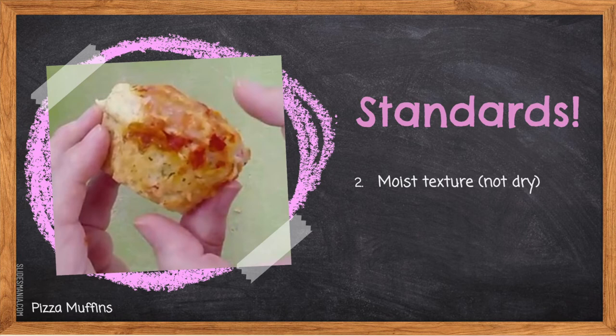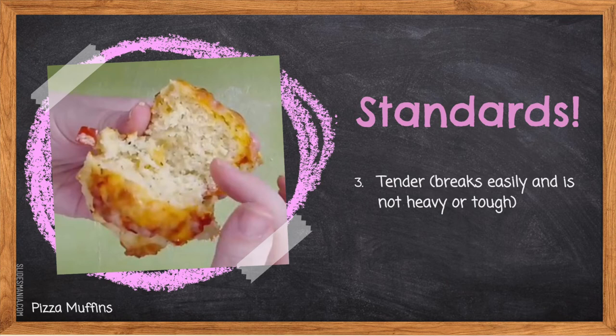Two — moist texture, not dry. This is achieved by measuring all your liquid ingredients properly and putting in the proper ratio of dry to liquid ingredients. This is also achieved by not over-mixing the batter. Three — tender, breaks easily, and is not heavy or tough. This texture is only achieved by not over-mixing. A properly mixed muffin will be soft with a nice even crumb structure in the middle — moist but still with a nice bite to it.